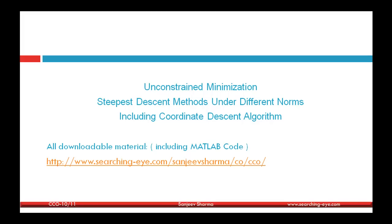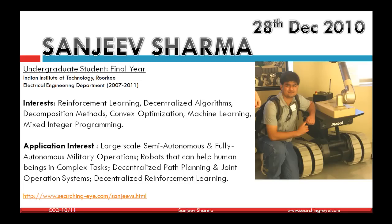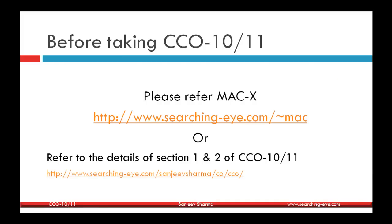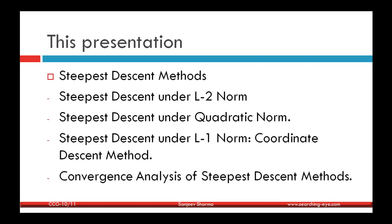You can download the MATLAB code and simulate the examples presented here. The topics covered include: general discussion about steepest descent methods such as directional derivatives, unnormalized and normalized steepest descent directions, and the relation between a norm and its dual norm. Then steepest descent for the L2 norm, the quadratic norm, and the L1 norm, followed by convergence analysis under any general norm.